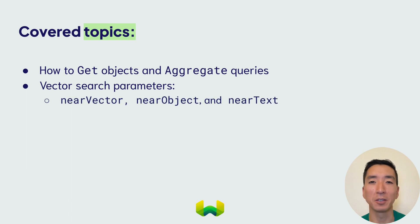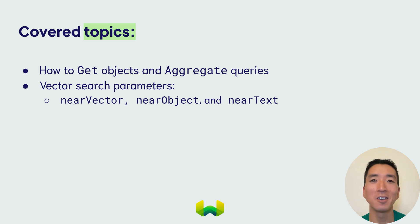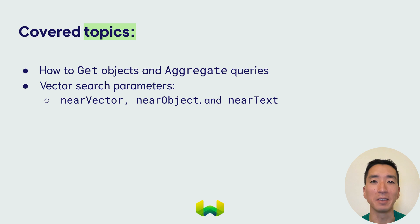We'll cover vector search parameters called near-vector, near-object, and near-text. You'll learn how these methods offer different pathways to help you find the data you're looking for, and how they ultimately work in the same way, despite having different inputs.